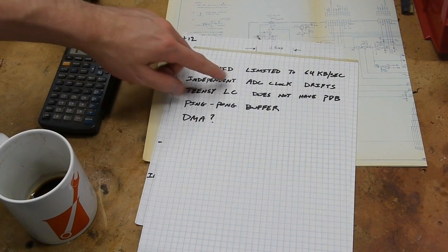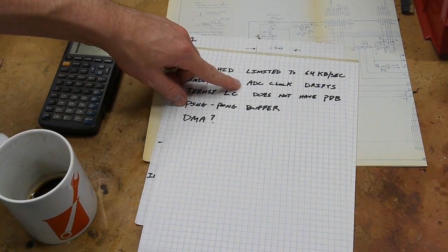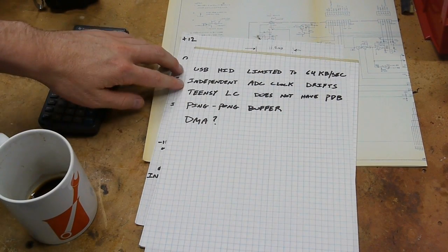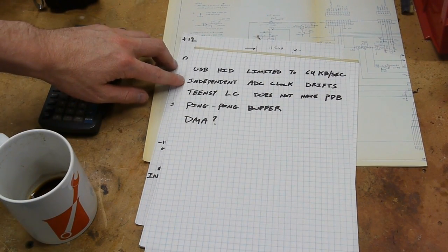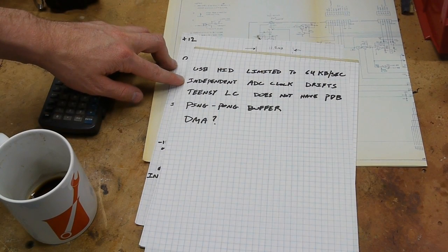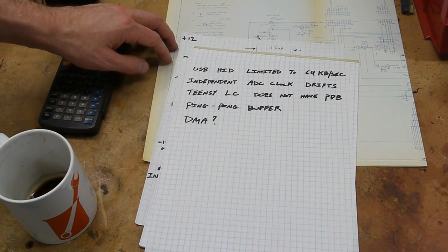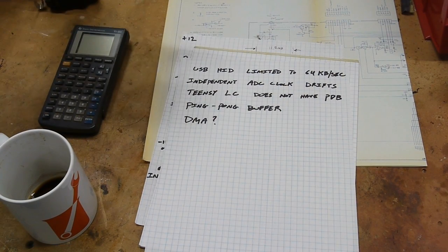I originally started using the independent ADC clock that the Teensy has, or that the Freescale microcontroller has. It says you should use this alternative clock if you're worried about noise coming from the system clock, and I thought, oh great, that's just what I want. But as it turns out, this is actually probably an RC timer inside the microcontroller and it drifts like crazy, so I couldn't use that and I switched back to the system clock.